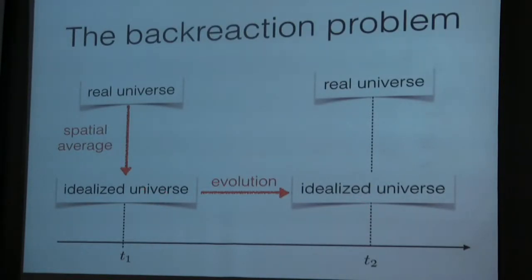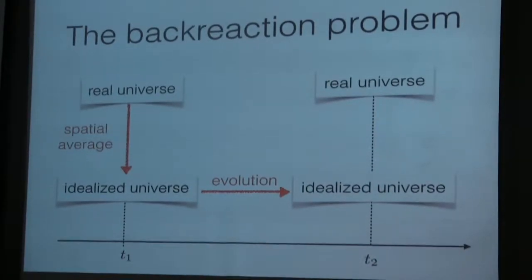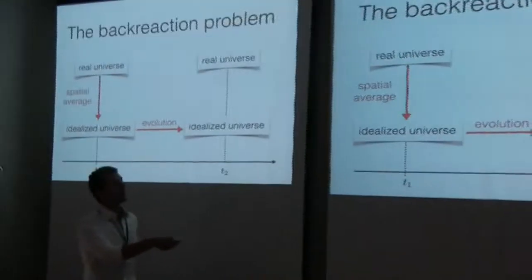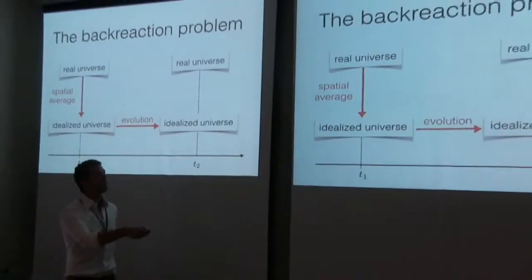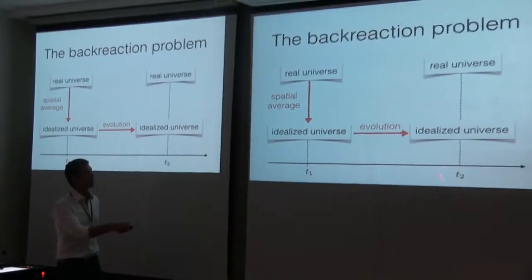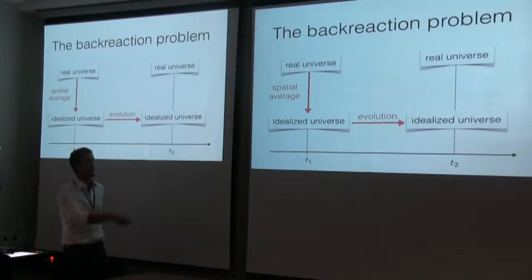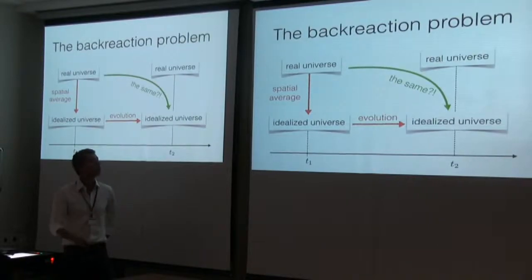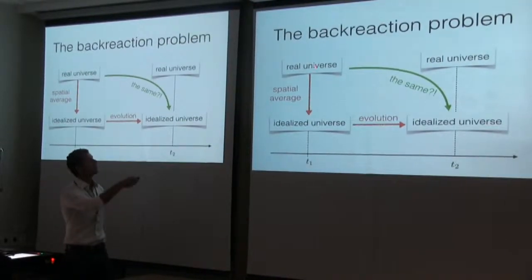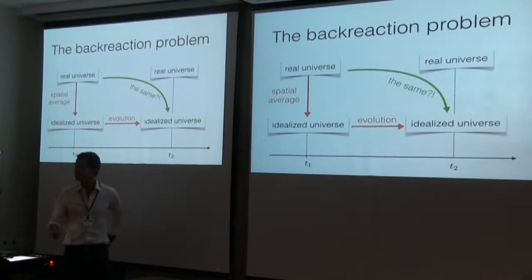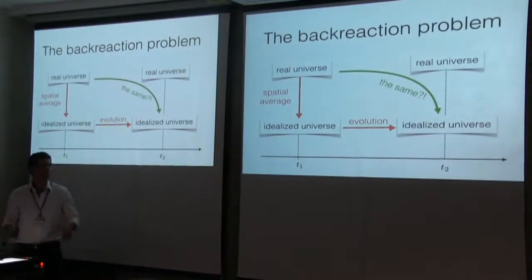We then evolve this idealized universe using the Friedmann equations. The question is: is this evolved idealized universe the same thing as smoothing the real universe after time evolution? In other words, is this the same thing as that? This is the summary of the back reaction problem.